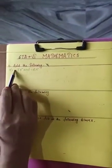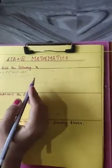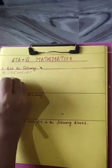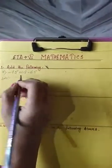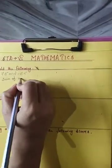Look at your book, exercise 3.2 question number 1: add the following. Part a gives you minus 75 and minus 65. Both sides have negative integers. To solve, first of all you will write the solution as the sum of absolute values.